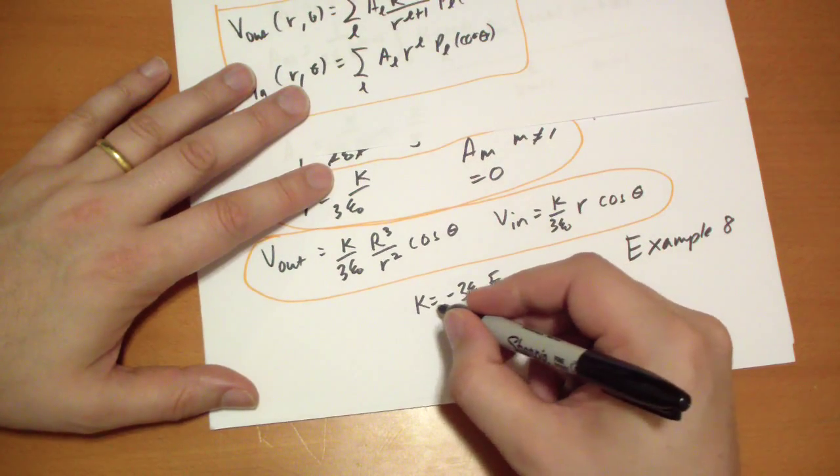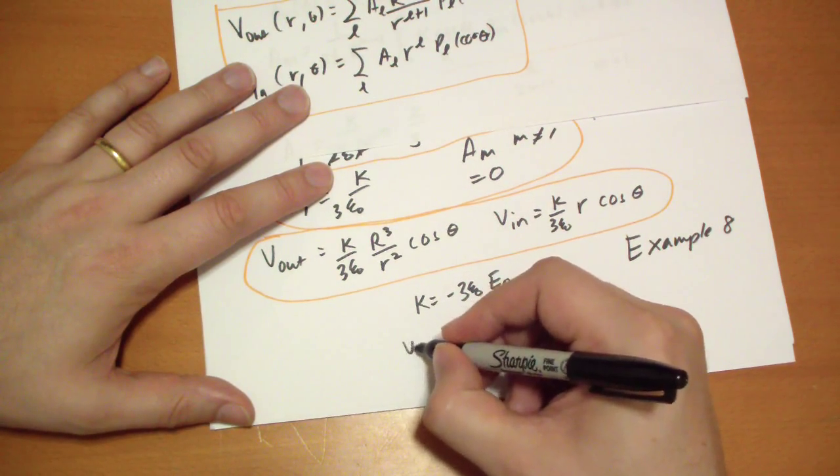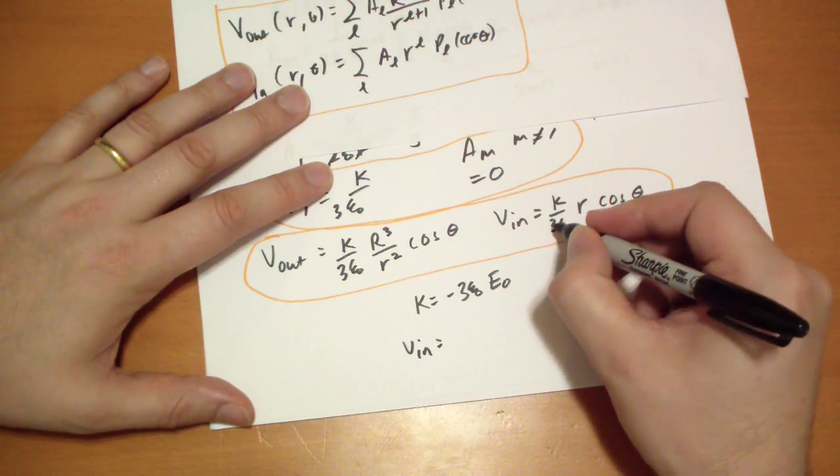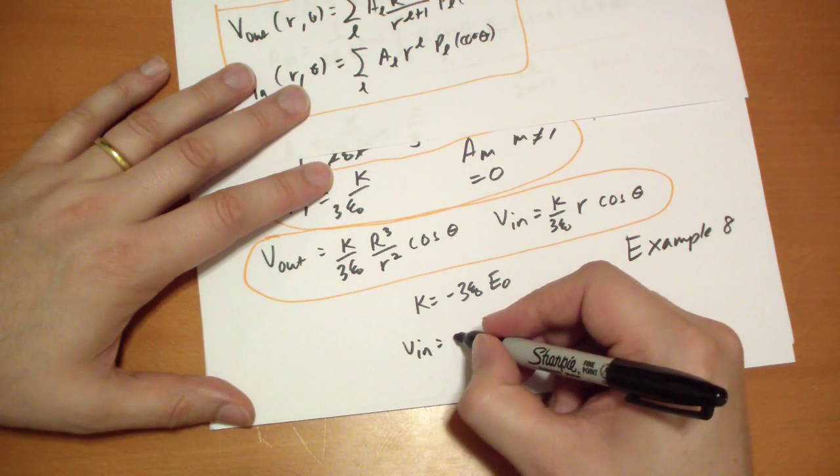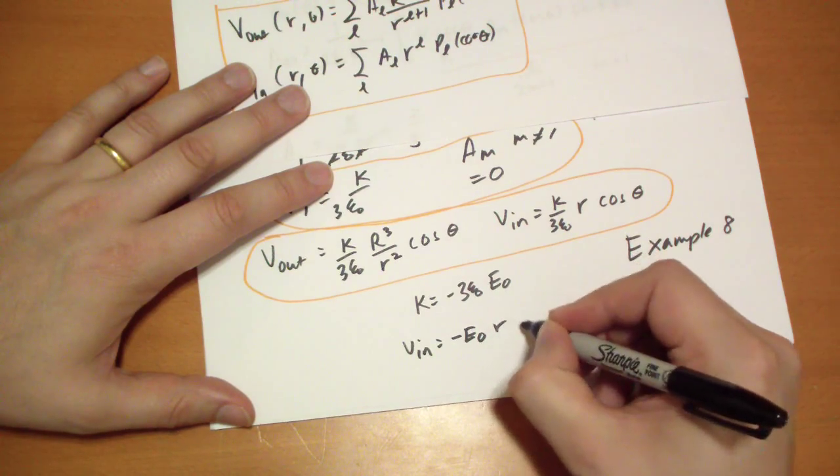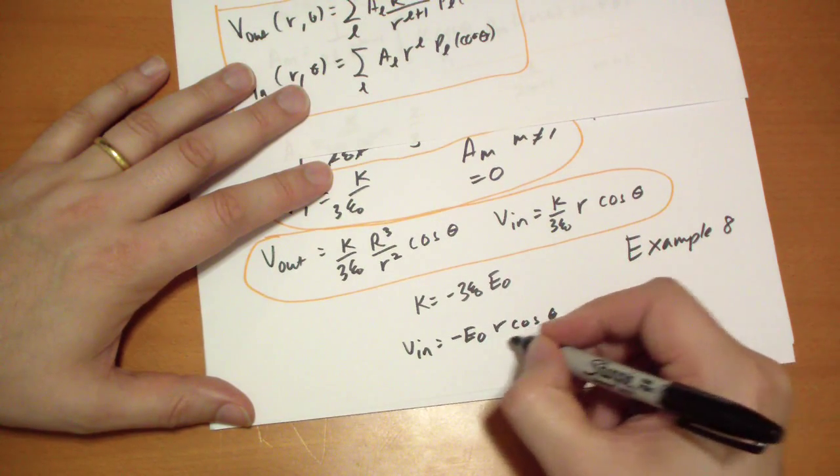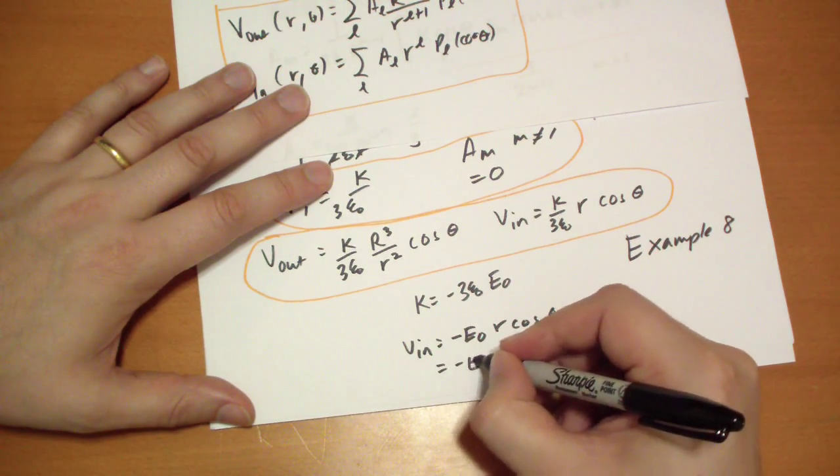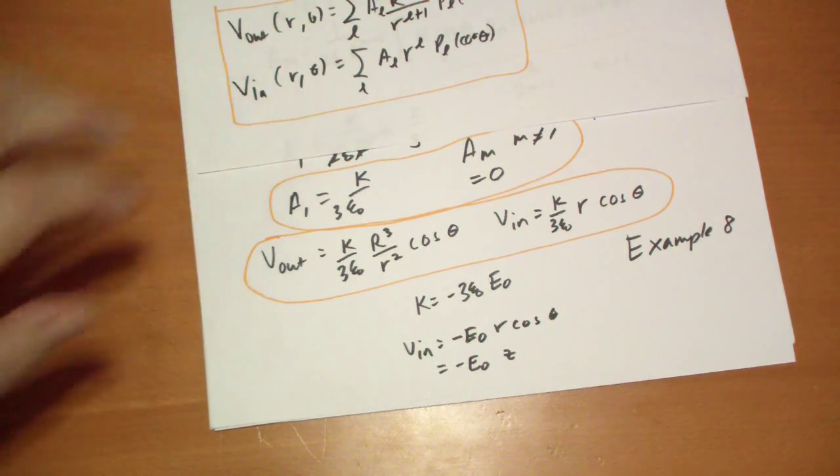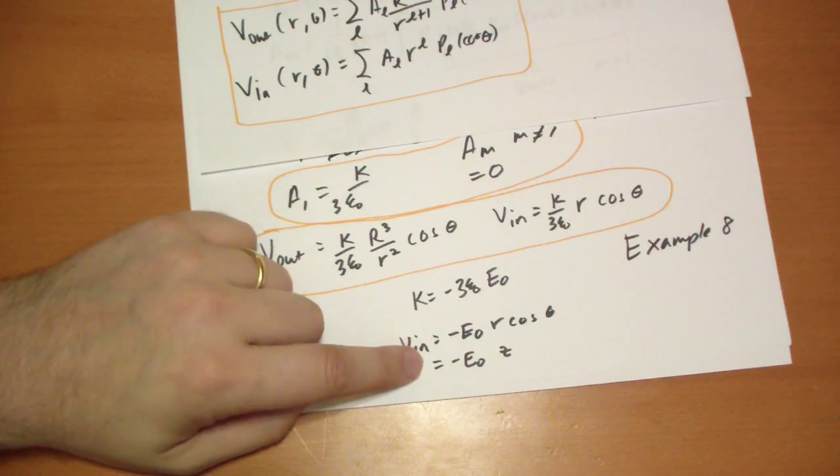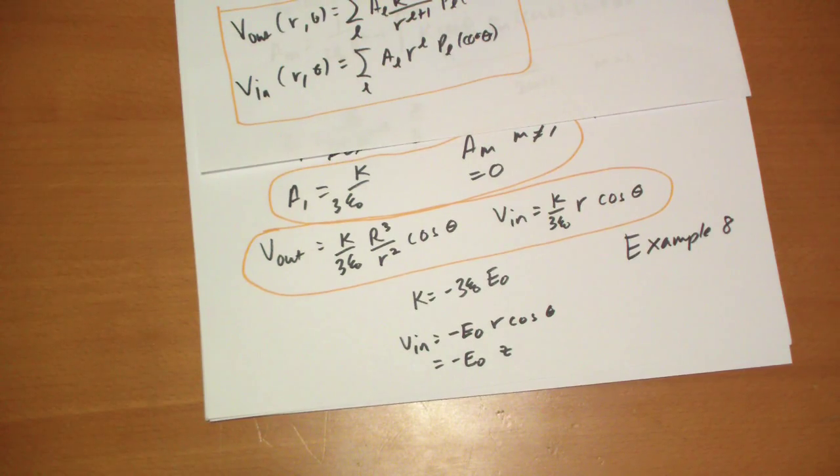Because if you notice, let's plug it in here, so v inside, plug that in, 3's cancel, epsilons cancel, so you get minus epsilon-naught r cos-theta. What's r cos-theta? That's just z in Cartesian coordinates. So the internal electric field cancels exactly the external electric field, which is what a conductor would do. It would maintain an internal potential that's flat. It doesn't have any charge inside it, it means it's flat.